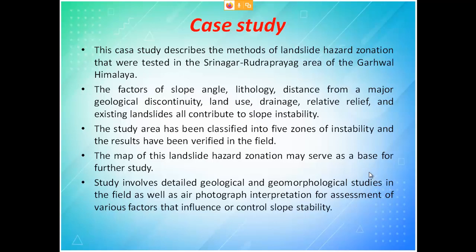The factors considered for slope instability are: slope angle — the degree of inclination; lithology — the rock type; distance from major geological discontinuity; type of land use; drainage — how water flows or stagnates after rainfall; relative relief; and existing landslides. These factors all contribute to slope instability, which is the cause of landslides.